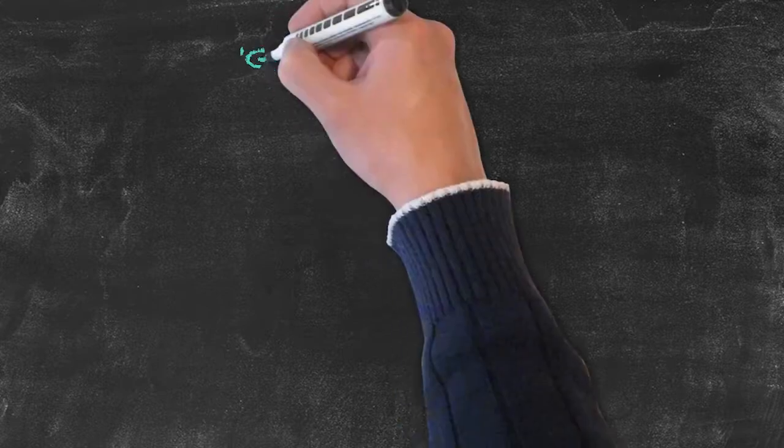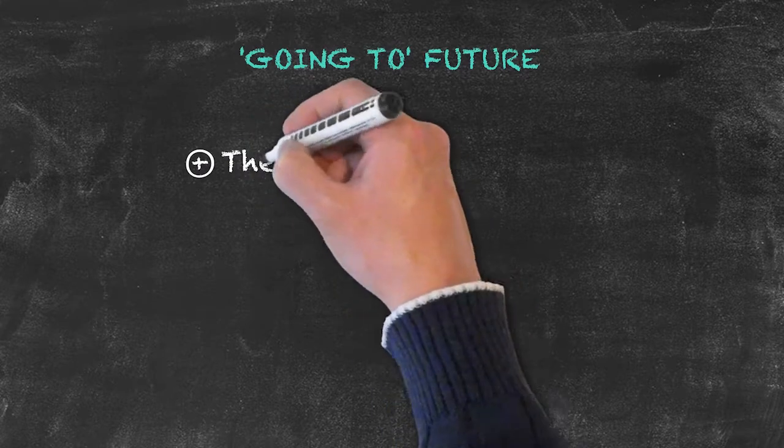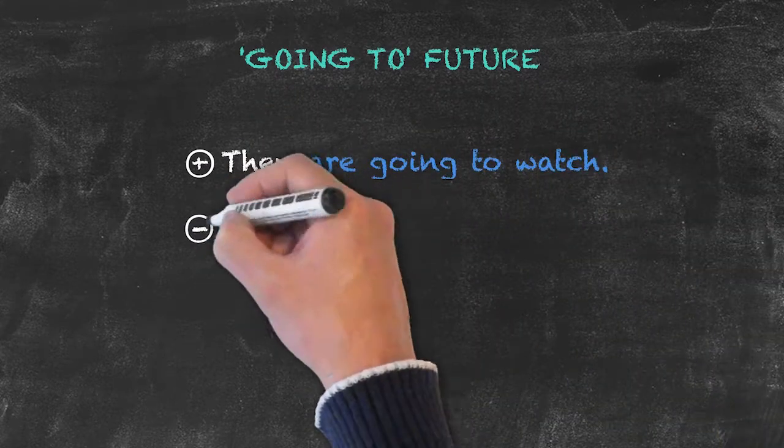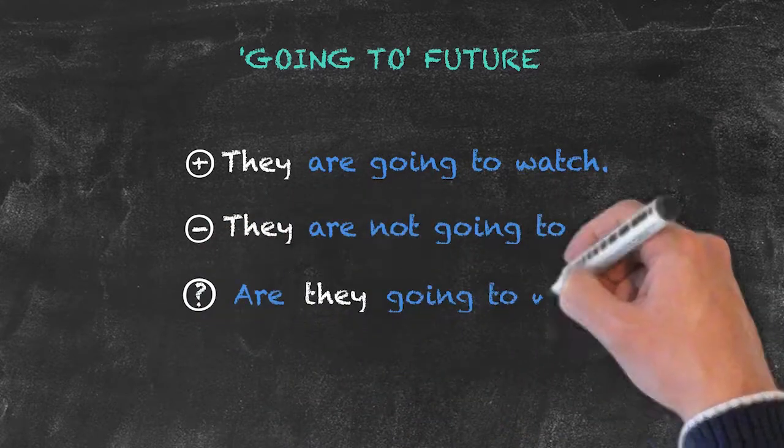Another way of expressing the future tense is by what's called the going to future tense. Here, we have our examples: they are going to watch, they are not going to watch, and the question, are they going to watch?